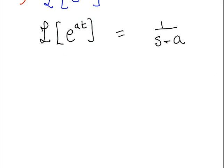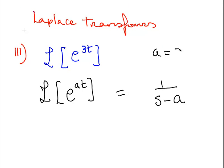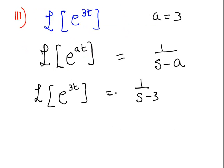Here a is equal to 3. So what we have is therefore Laplace transform of e to the 3t is 1 over s minus 3. Watch out for the signs in this one. We have a 3 here and we end up with a minus 3 down here.